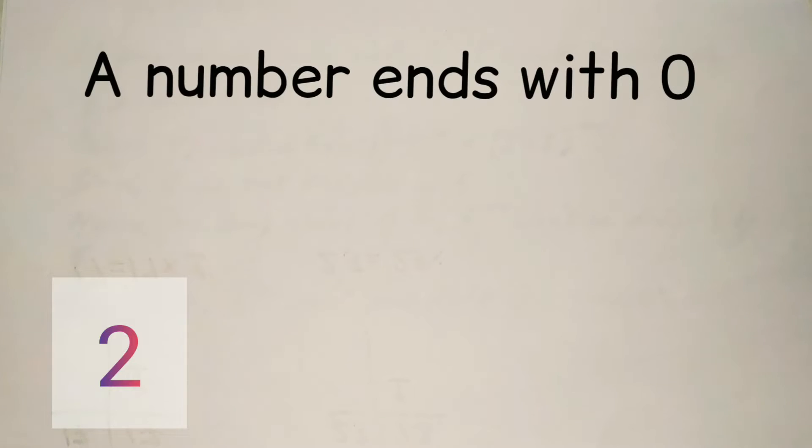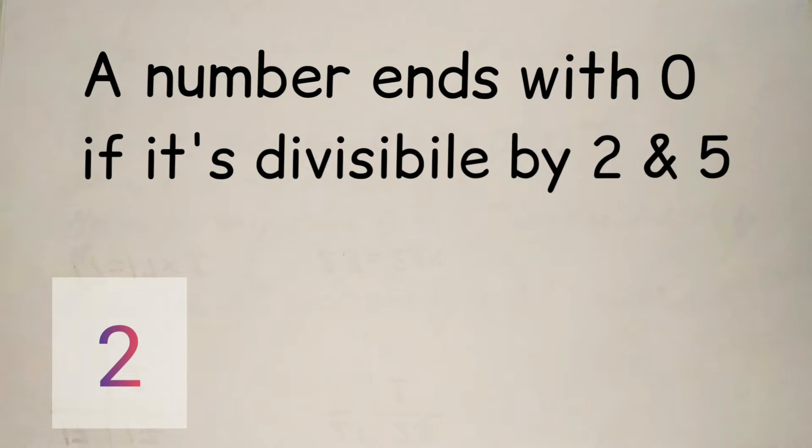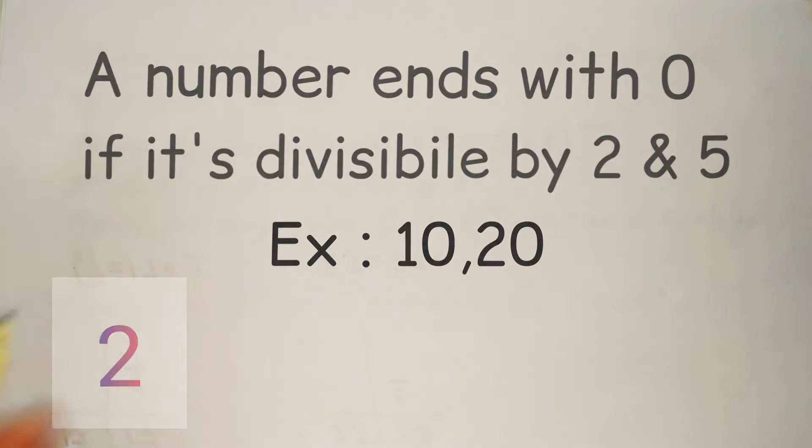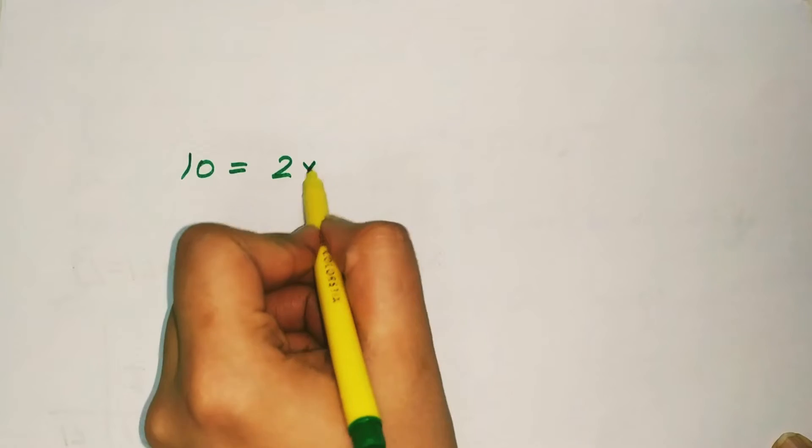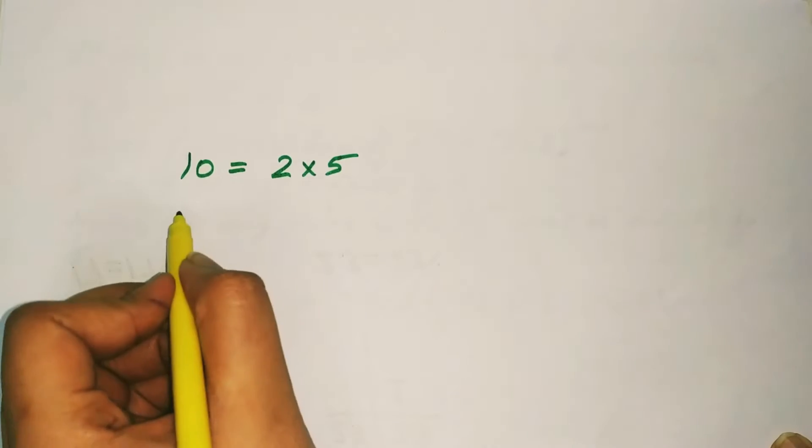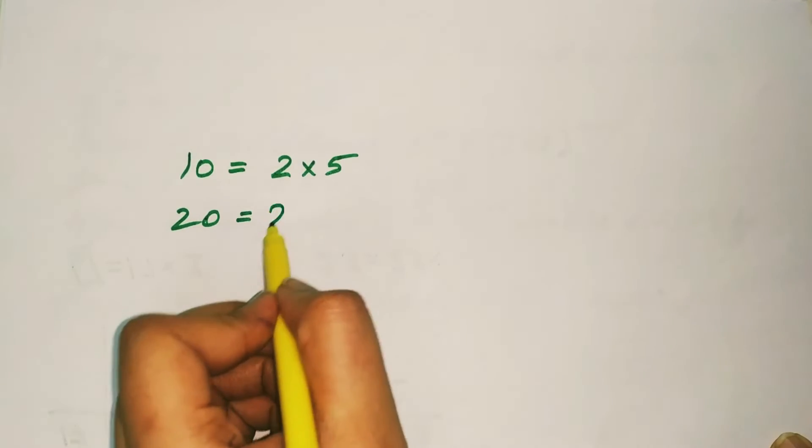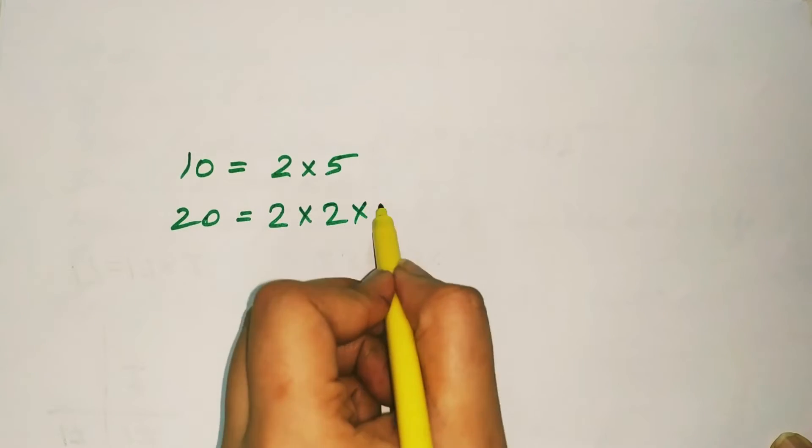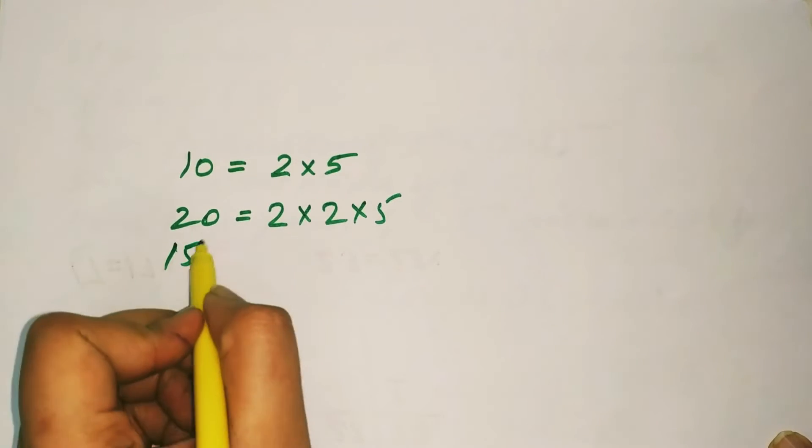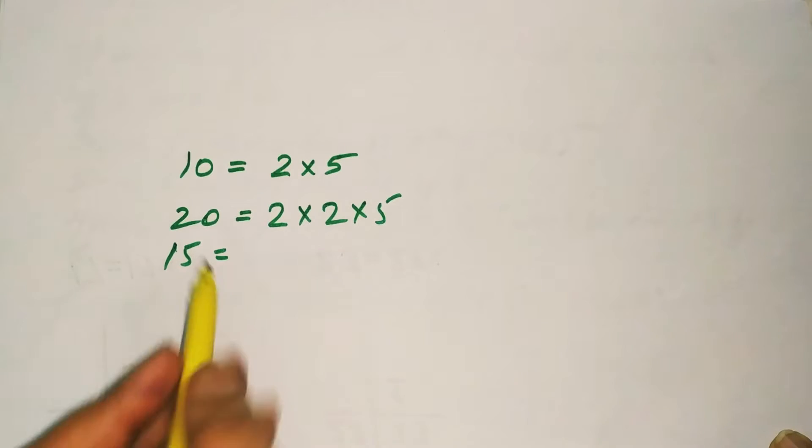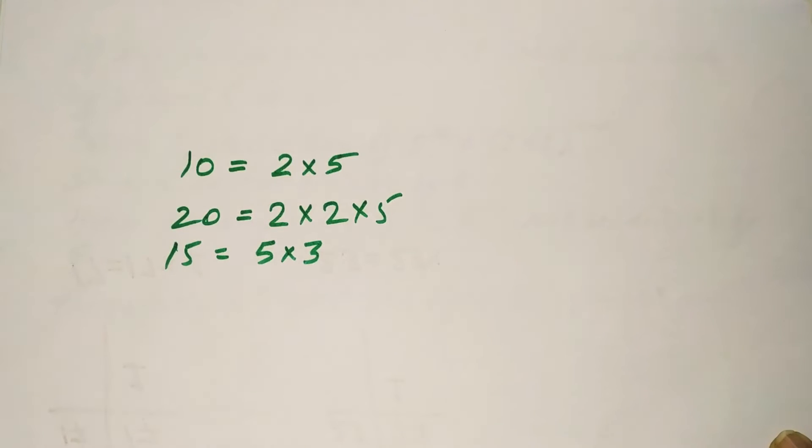Another thing, a number can end with digit 0 if and only if it's divisible by 2 and 5. For example, 10 is divisible by 2 as well as 5. 20 is divisible by 2 into 2 into 5. Whereas 15 is only divisible by 5 and 3 but not 5 and 2. Hence it does not end with 0. Now third thing,